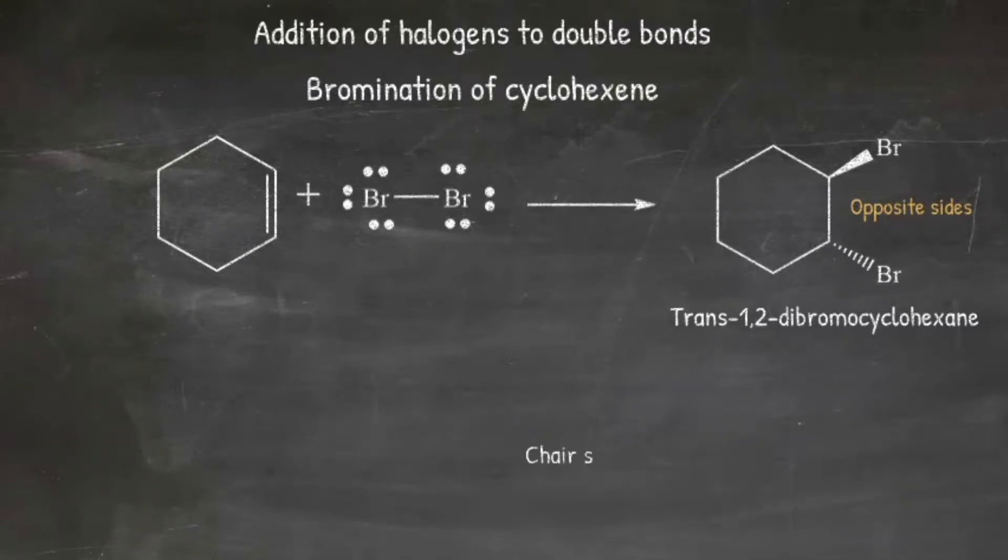The chair structure also shows the addition of the bromine atoms on opposite sides. This is also called anti-addition.